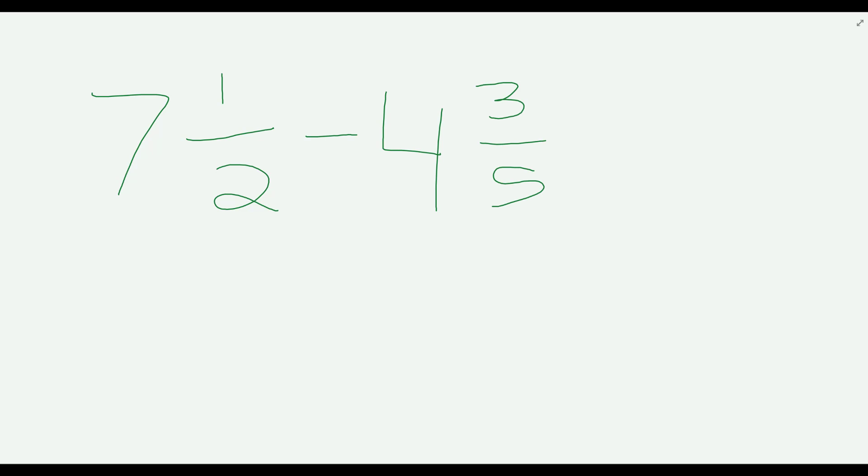what you do is first you do 7 minus 4. No, before we do that, we'll make a common denominator. Let's do 2 times 5 is 10. Alright, we got a common denominator, friends! This is awesome!